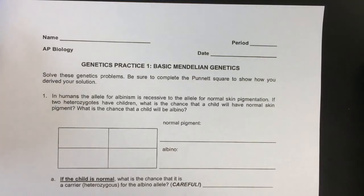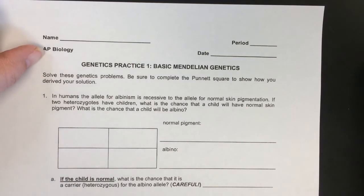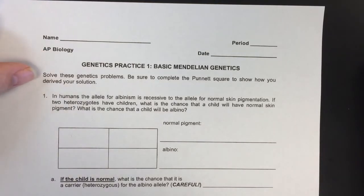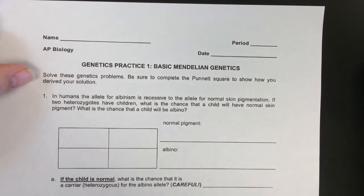Genetics Practice 1: Basic Mendelian Genetics. This is a worksheet from AP Biology and it's ridiculously easy, so you guys will have no problem with it. You're going to solve these genetic problems and be sure to complete the Punnett Square to show how you derived your solution.